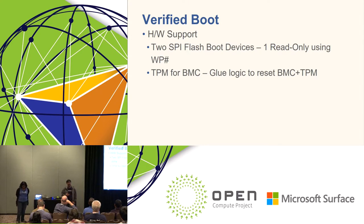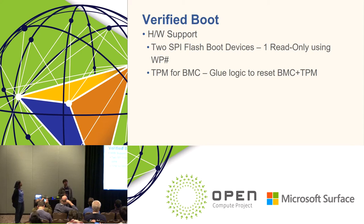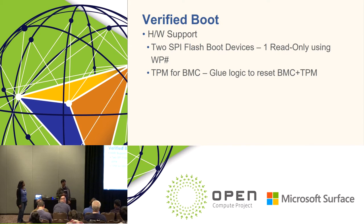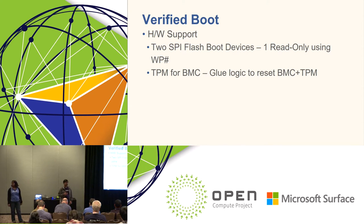What hardware do we need to support verified boot? The first requirement is two SPI flash devices. Typically we need one SPI flash for booting the BMC. We previously added a second SPI flash as a recovery mechanism — in case the first gets corrupted. But now we want to repurpose it for the verified boot feature. One SPI flash will be a secure ROM — read-only, burned once. The second is where we update periodically. The second hardware addition is a TPM for the BMC. You would typically see TPMs on host systems, but now we're adding it to the BMC. We're not using it fully yet but have plans to incorporate it into verified boot to make it more secure.